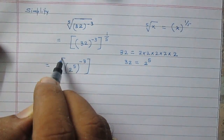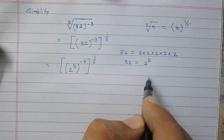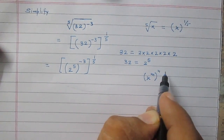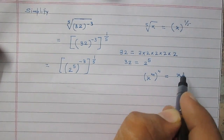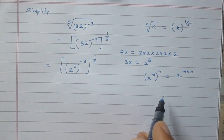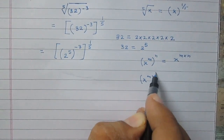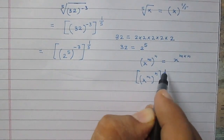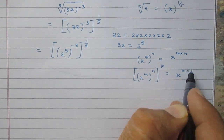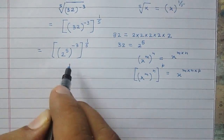Then raised to the power 1 by 5. Now according to the laws of exponents, we know that x raised to the power m, raised to the power n, raised to the power p is equal to x raised to the power multiplication of m, n, and p.